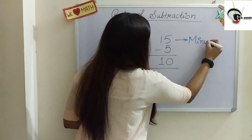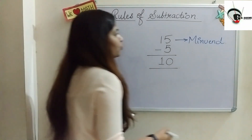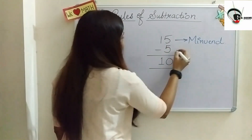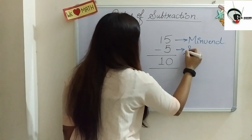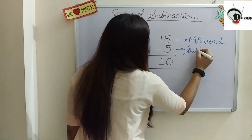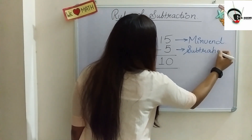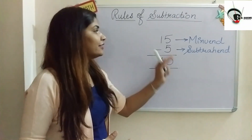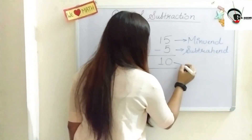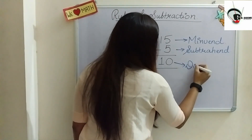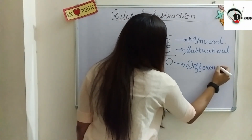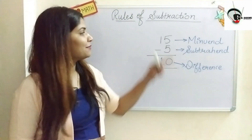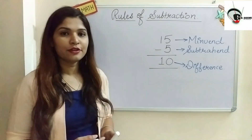The number from which we subtract is called the minuend. The number which we are subtracting is known as the subtrahend — S-U-B-T-R-A-H-E-N-D. And the result of the subtraction is called the difference — D-I-F-F-E-R-E-N-C-E. So these are the three terms we use in subtraction: minuend, subtrahend, and difference.